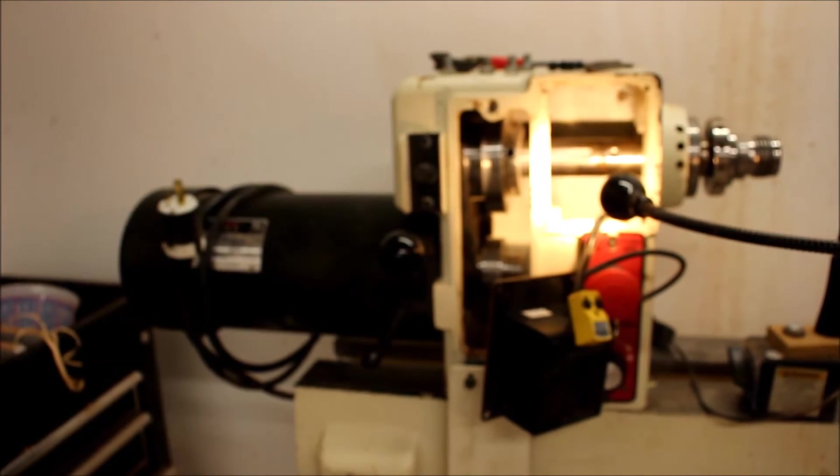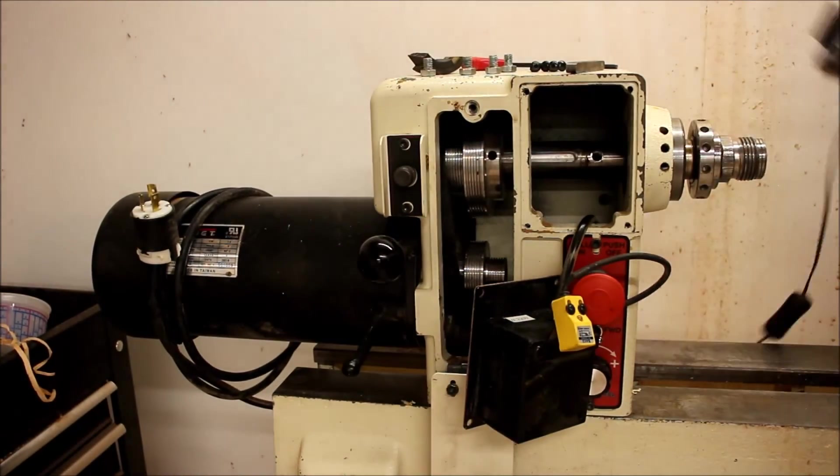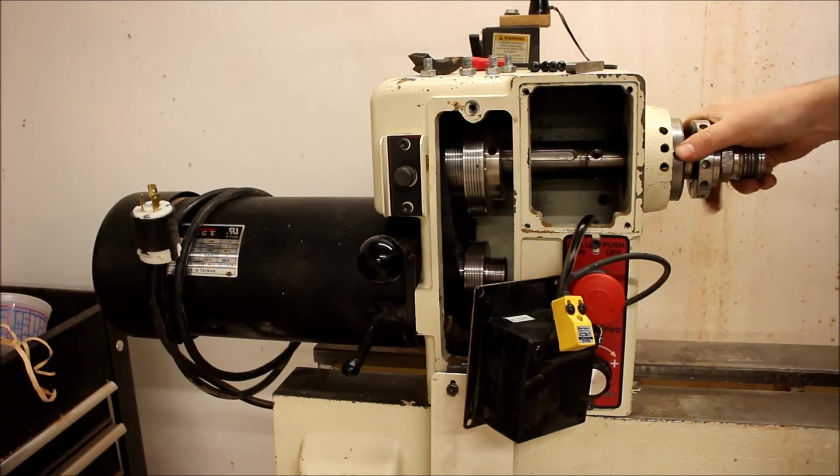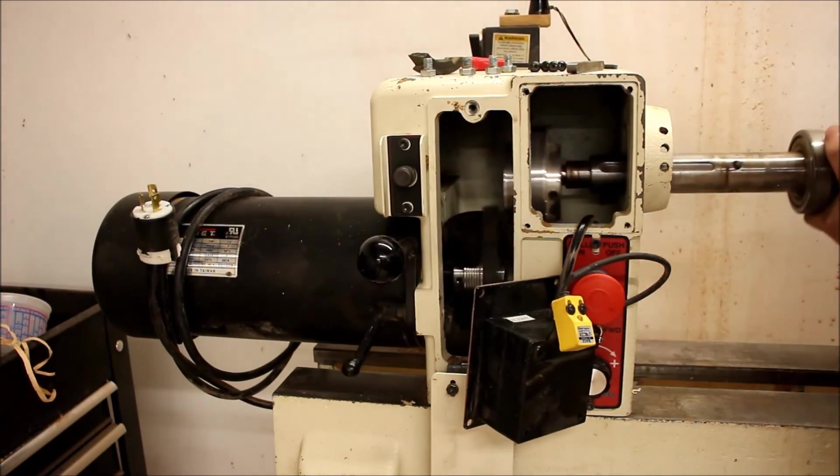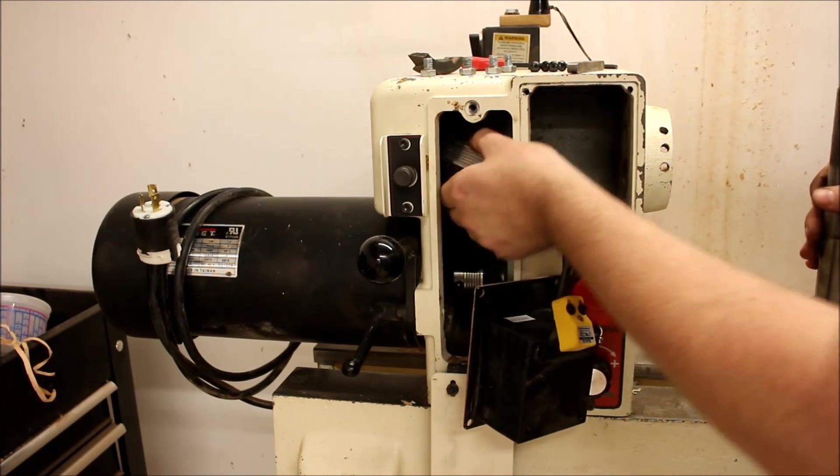So now let's get this pulley out of the way. Everything is freed up and we should be able to just pull, get our pulley off, and then our spindle will come right out.